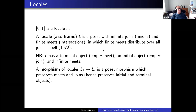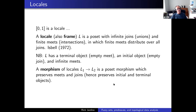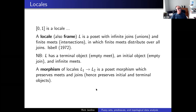In particular, a locale has a terminal object, an empty meet, an initial object, and an empty join. A morphism of locales is just a poset morphism which preserves structure — preserves all meets and joins, and so preserves initial and terminal objects. The collection of locales with these morphisms is the category of locales. In the literature that's called the category of frames, and the category of locales is the opposite category, but I'm not going to distinguish between locales and frames if I don't need to.